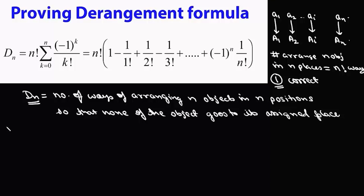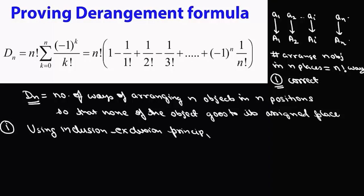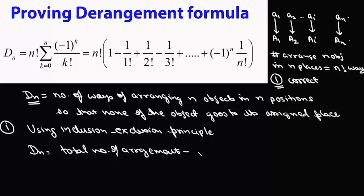There are two ways to prove this formula. The first method is using the inclusion-exclusion principle. In this approach, from the total number of arrangements, we will remove all those arrangements in which at least one object is in its assigned place.